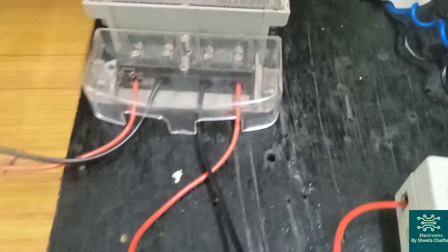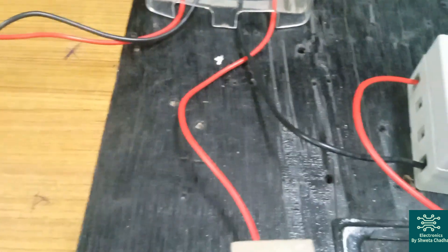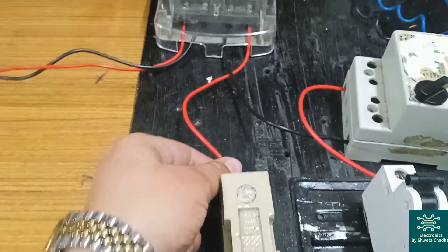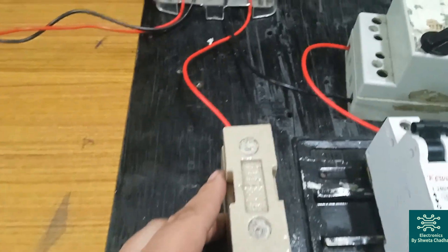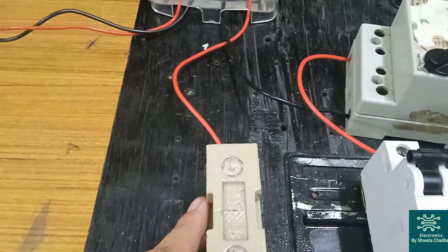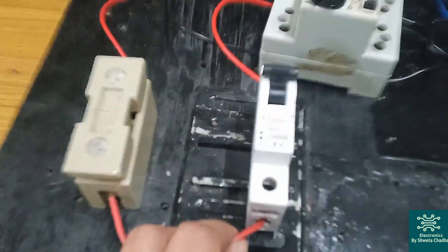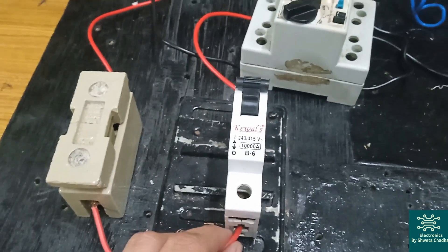The phase wire is first of all connected with your fuse. Have a look over here. This phase wire has been connected with fuse. After fuse, the second safety device that we are going to use is MCB. So it has been connected with MCB.